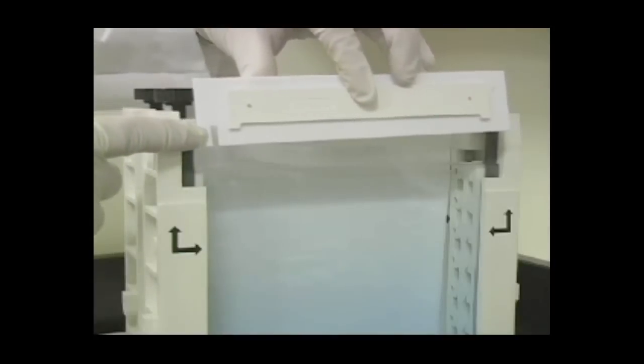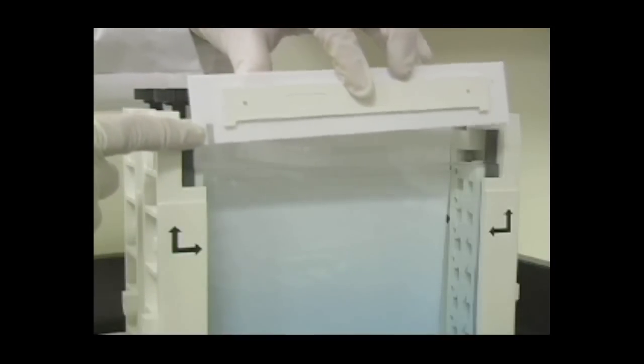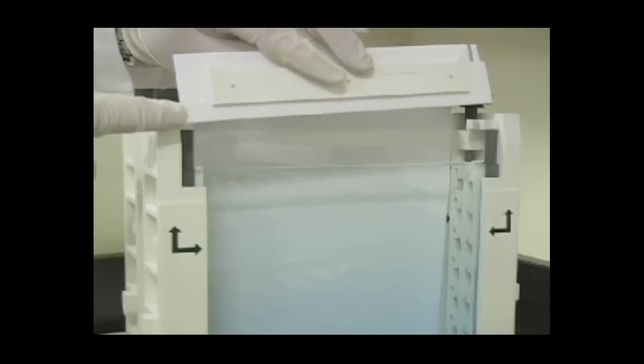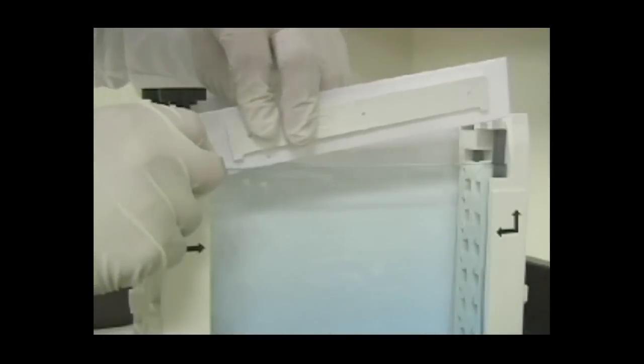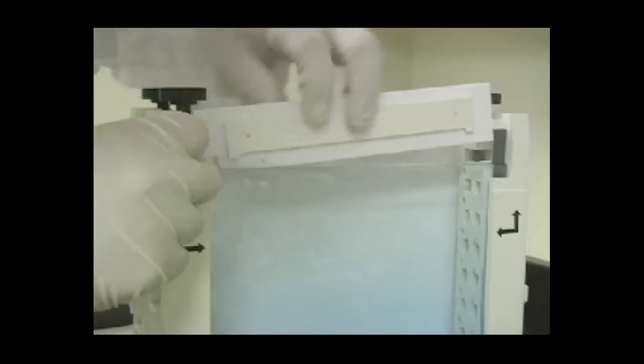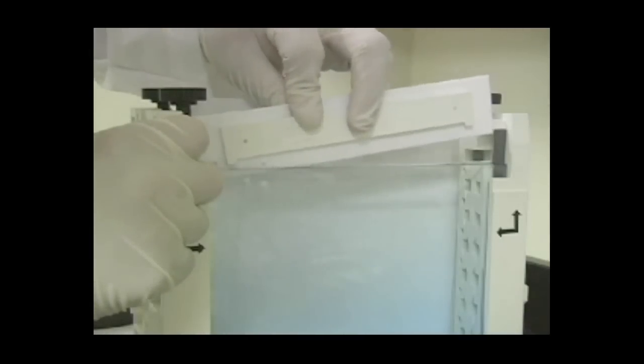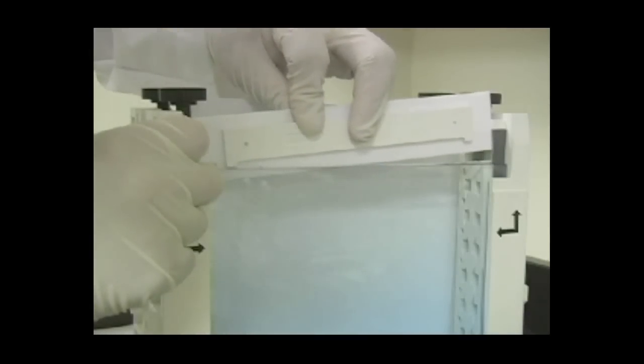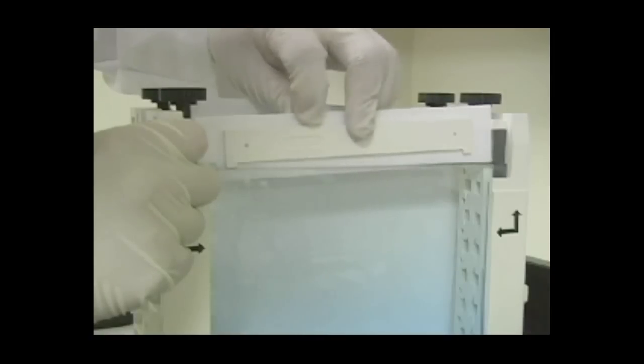The IPG comb has two sides, one with a reference wall for standards and one without. The side without the standard lane allows for commercially available 18 cm strips to be used without trimming. The side with the end reference wall allows standards to be run alongside your sample, but an 18 cm IPG strip will need to be trimmed to fit into the smaller prep well.